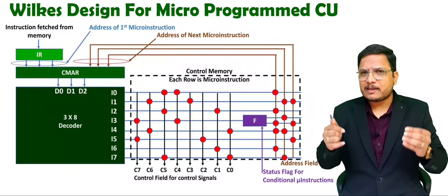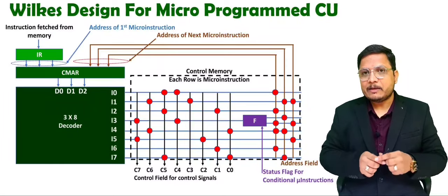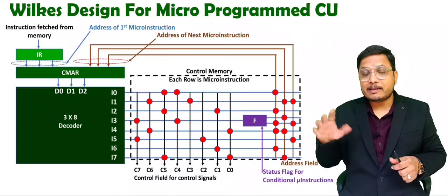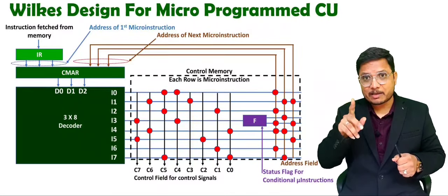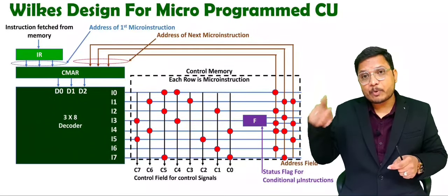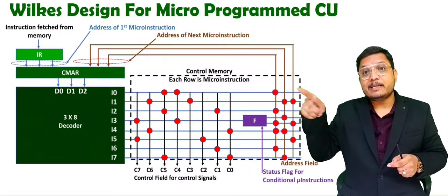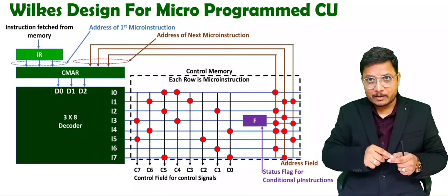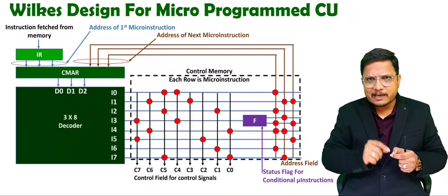There are a few basics you should know before seeing how this circuit works. When you talk about execution of a program, that program will be stored inside memory — that will be external memory. The program will be a combination of instructions. Those instructions in external memory will be taken inside the CPU one by one. So first, let us say I am taking one instruction, I1, inside the CPU.